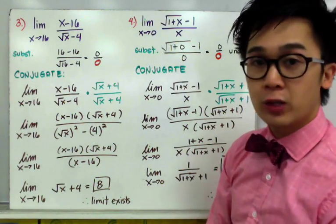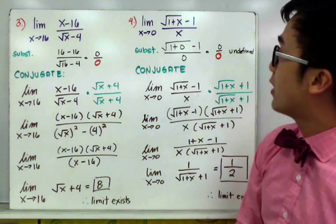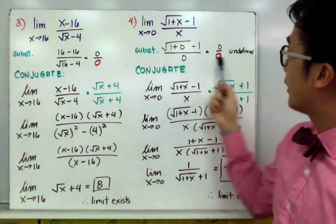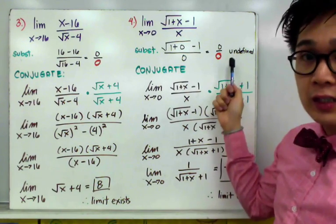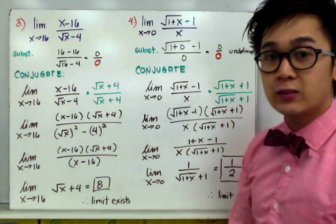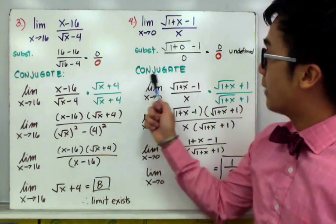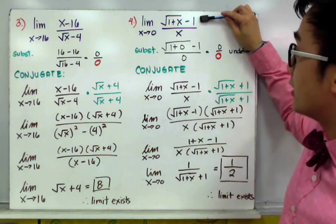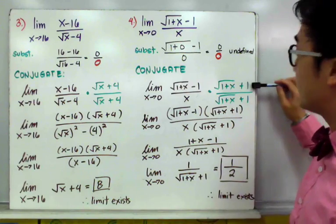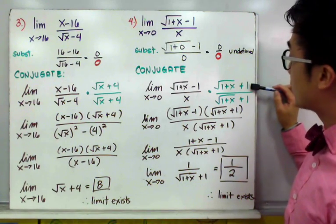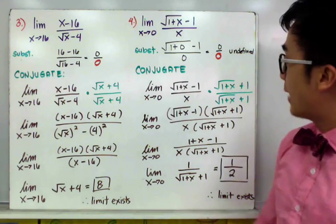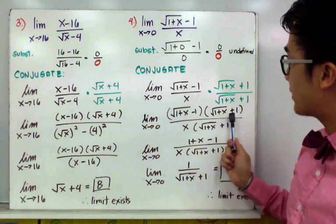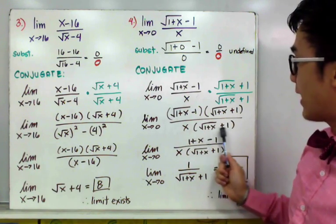Example 4 is similar: the limit of square root of 1 plus x minus 1, all over x, as x approaches 0. Substituting 0 makes the denominator undefined, so we use the conjugate. Since there is a radical in the numerator, we multiply the fraction by the conjugate square root of 1 plus x plus 1, applying it to both numerator and denominator, giving square root of 1 plus x minus 1 times square root of 1 plus x plus 1, all over x times square root of 1 plus x plus 1.